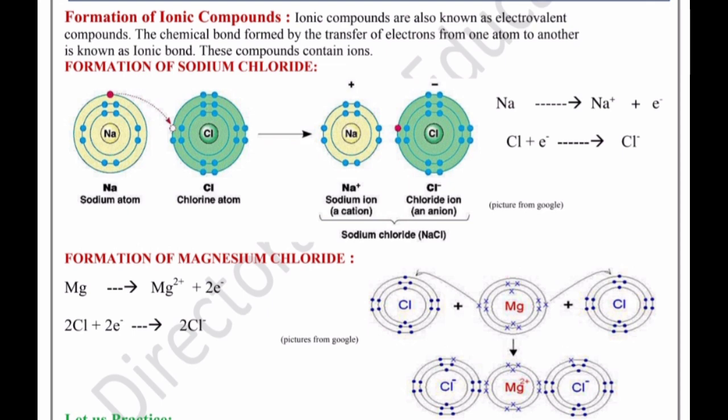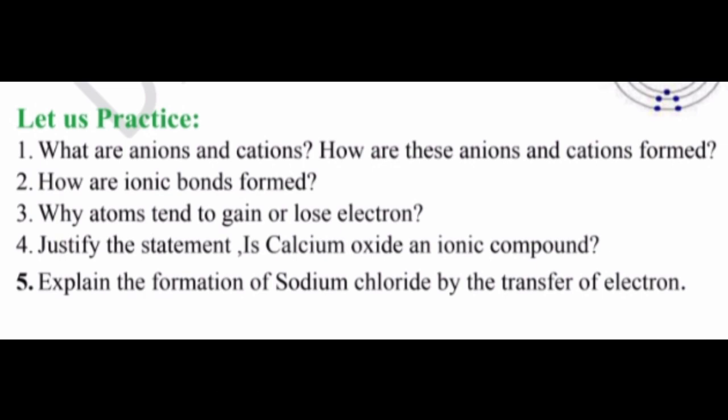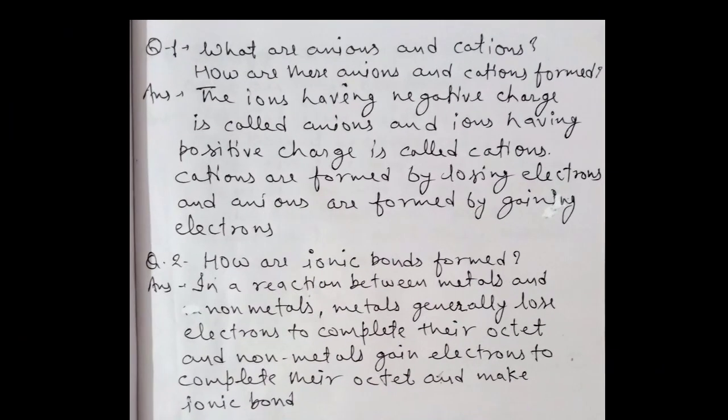Let us practice some questions. Question 1: What are anions and cations, and how are these formed? The ions having negative charge are called anions, and ions having positive charge are called cations. Cations are formed by losing electrons and anions are formed by gaining electrons. Example: Na+ (cation) aur Cl- (anion).